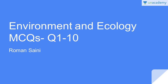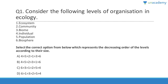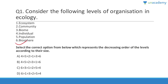Let us start our awesome course on environment and ecology, questions 1 to 10. Consider the following levels of organization in ecology and select the option which represents the decreasing order according to their size. First you have the biosphere, which is the biggest, then biome, then ecosystem, then community, then population, and finally individual.